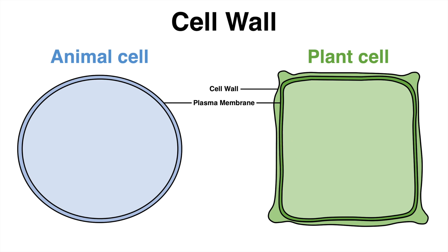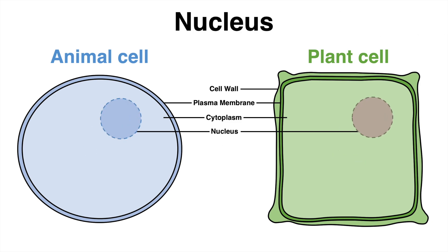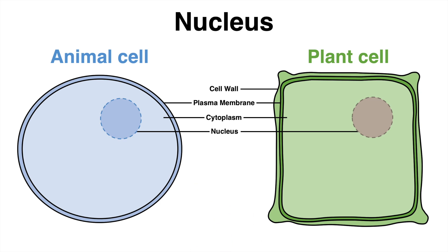Inside the plasma membrane lies the cytoplasm. Cytoplasm is described as the totality of cytosol — a liquid containing the nutrients — the cytoskeleton, and the organelles of a cell. Among these, the nucleus might be one of the most well-known cell compartments, present in both the plant and the animal cell. The nucleus functions as the control center of the eukaryotic cell. It stores the majority of the genetic information in the form of DNA that is often organized in chromosomes, which effectively allows storing a rather long sequence of genetic information inside the nucleus.